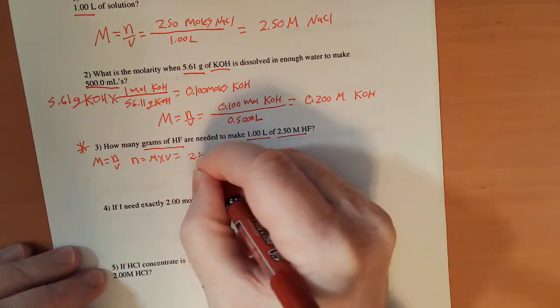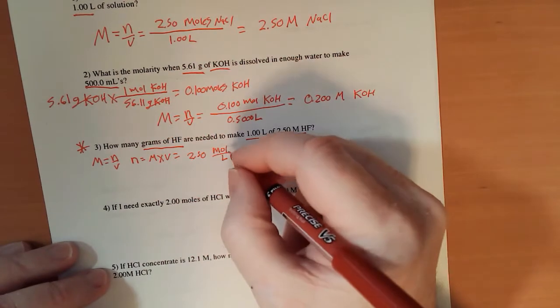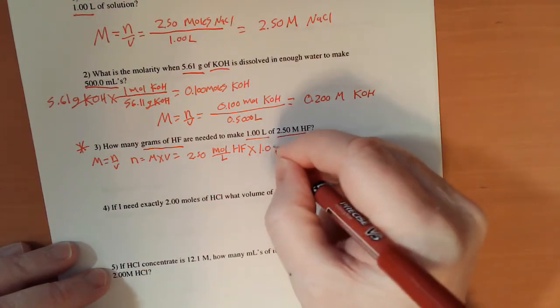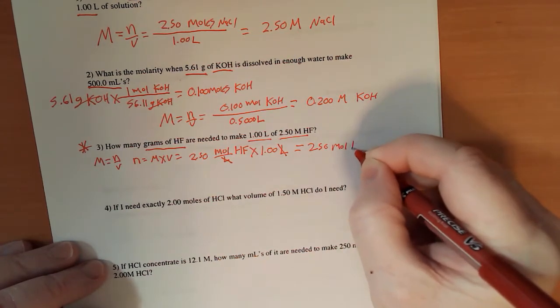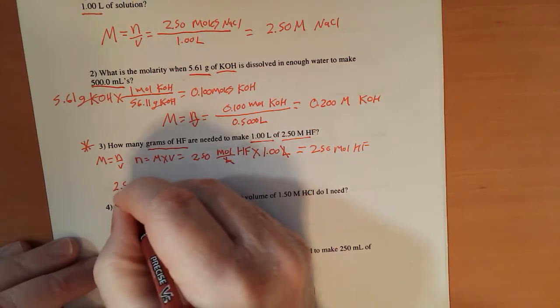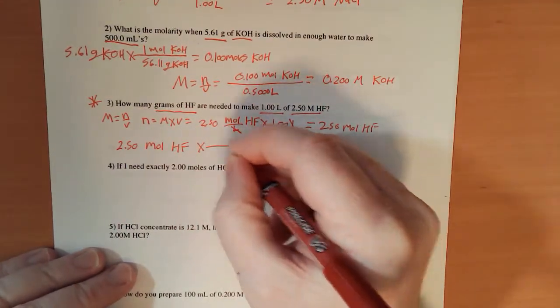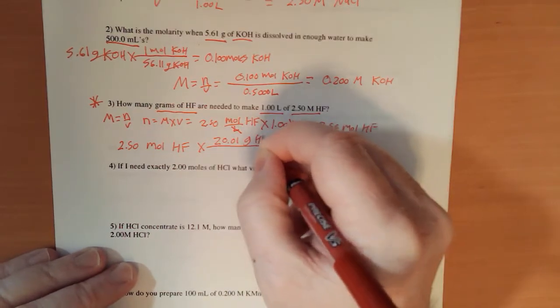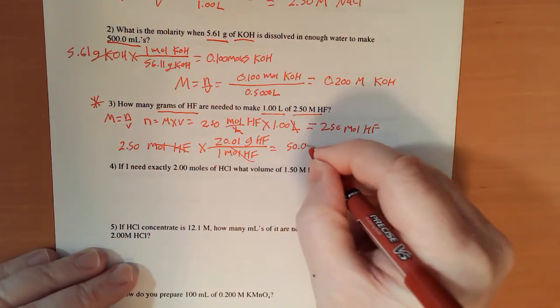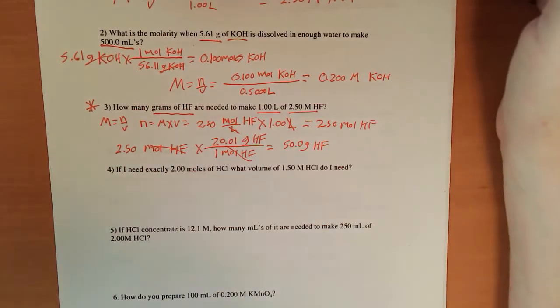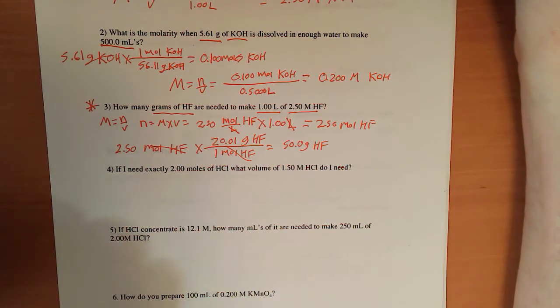So I have 2.50. Now this is the best clue I can give you the whole day. Instead of writing the capital M, I wrote moles over liters, so that when I multiply by 1.00 liters, liters cancels, and I get 2.50 moles of HF. Now my 2.50 moles of HF can be converted into grams times, I added up the molar mass earlier, it's 20.01 grams of HF for 1 mole of HF. Moles cancels, and this is 50.0 grams of HF. Really pay attention to number three. That's an important one.